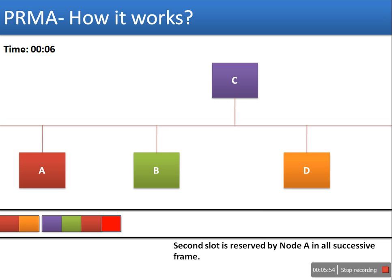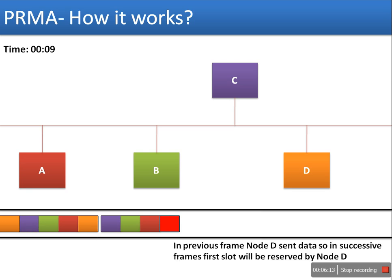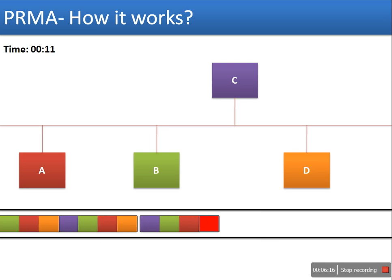The transmission pattern continues similarly in following frames. In the next frame: first slot is reserved for D, second slot is reserved for A, third slot is reserved for B, and fourth slot is reserved for C. Every station sends their data in their corresponding reserved time slot.